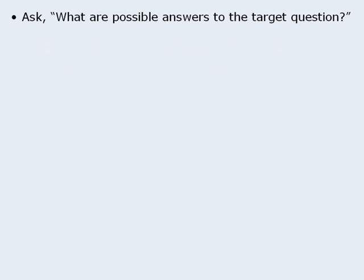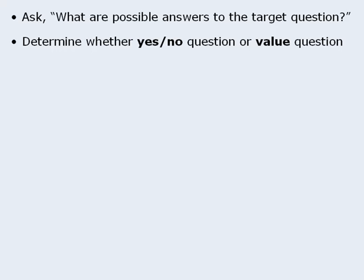OK, this next strategy follows from the first strategy. It is, determine whether the target question is a yes-no question or a value question. Now every data sufficiency target question is either a yes-no question or a specific value question. For yes-no questions, you must determine whether the answer to the target question is always yes or always no. For value questions, you must determine whether there is one unique value that can be deduced using the information provided in the statements.